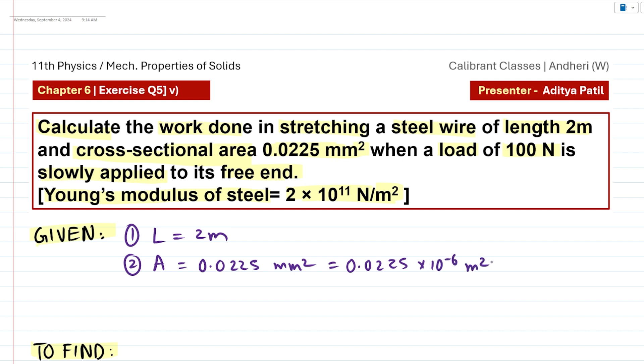1 mm² is 10⁻⁶ meter square. And let's simplify this term a little bit further as 2.25 × 10⁻⁸ meter square. We have done a simple decimal shift over here.